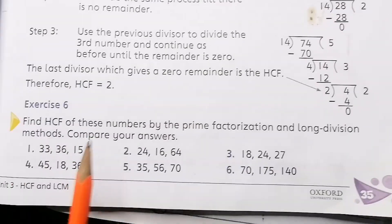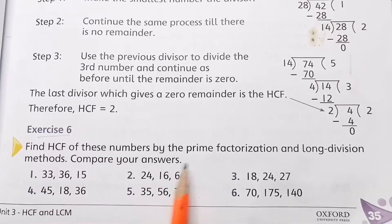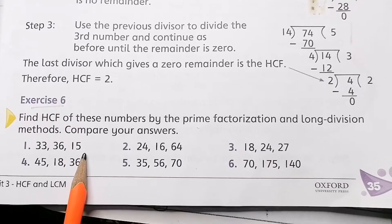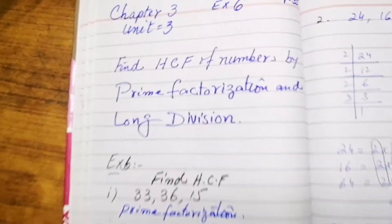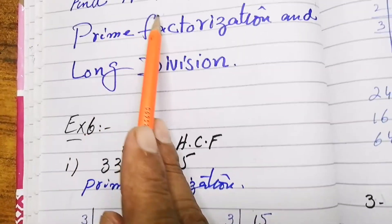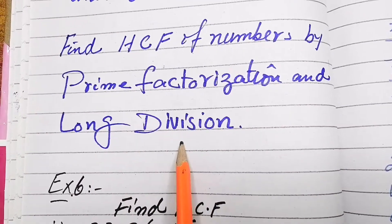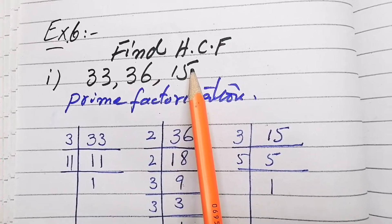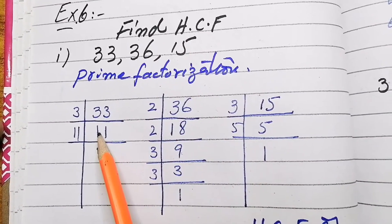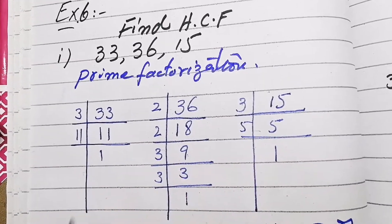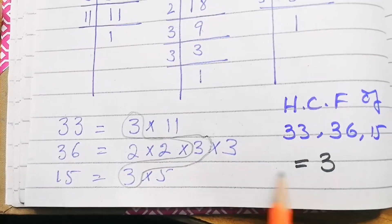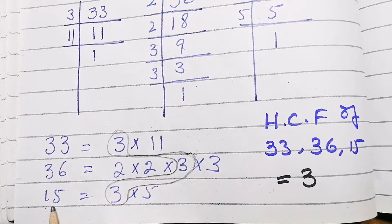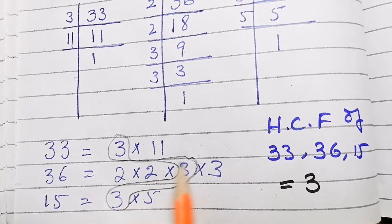Exercise 6 requires us to find HCF of given numbers by prime factorization method and also by long division method. For part 1, the numbers 33, 36, and 15 are given. We take their prime factors separately: 33 = 3 × 11, 36 = 2 × 2 × 3 × 3, and 15 = 3 × 5. The only common factor is 3, so the HCF by prime factorization method is 3.